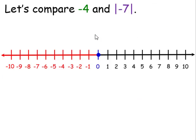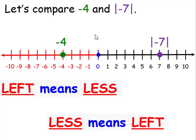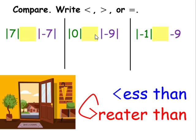Let's compare negative 4 and the absolute value of negative 7. The location of negative 4 is here on the number line. The absolute value of negative 7 is 7, so its location is here. Left means less, so negative 4 is less than the absolute value of negative 7. Or we can say the absolute value of negative 7 is greater than negative 4. Now let's compare the absolute value of 7 and the absolute value of negative 7. The absolute value of 7 is 7 and the absolute value of negative 7 is also 7, so they are equal.